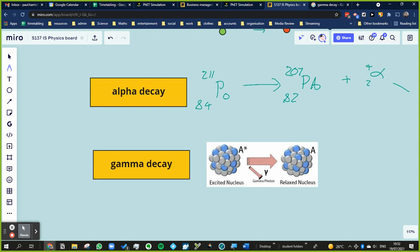And in doing so, it emits the excess energy it did have as a gamma photon, or a gamma ray.